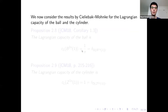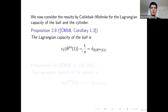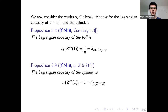Now let's look at two results by Chaidze-Bak-Monk concerning the Lagrangian capacity. First, they show that the Lagrangian capacity of the ball is 1 over n, which equals delta of the ball. They also compute the Lagrangian capacity of the cylinder, which is 1, which equals delta of the cylinder.